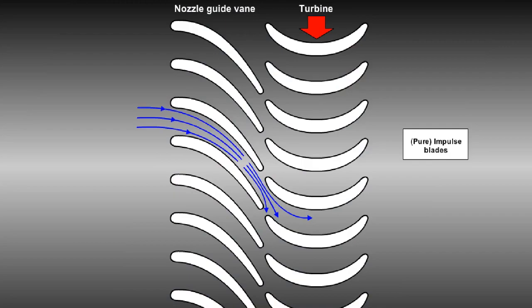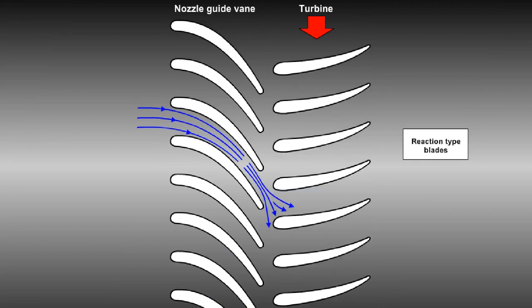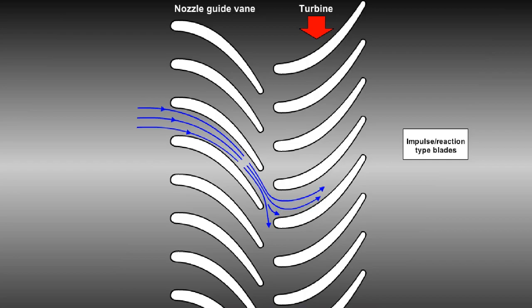The turbine blades themselves can be impulse type, which is similar in action to a water wheel, reaction type, these blades rotate as a reaction to the lift they create as the gas stream flows over them, or a mixture of the two types, which is called impulse reaction.